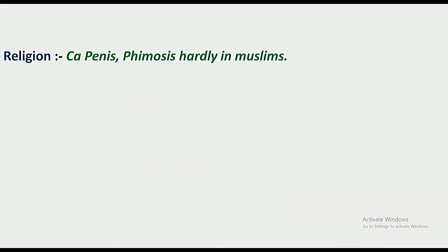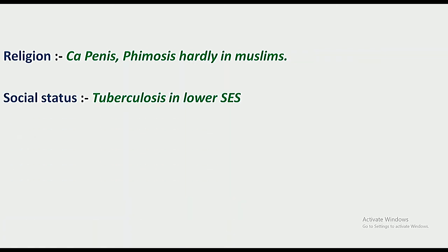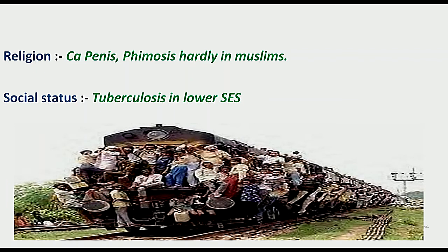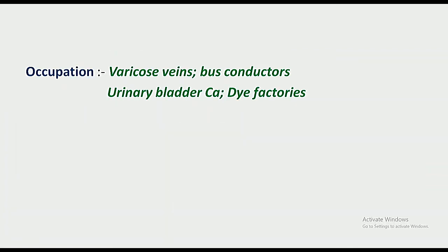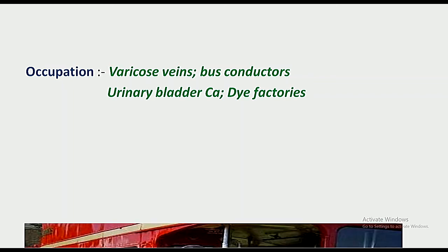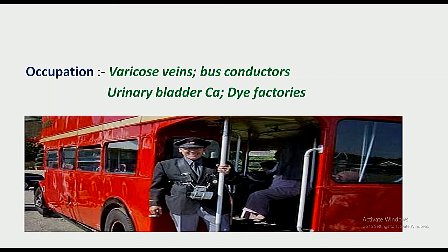Religion plays a role — phimosis and paraphimosis are hardly seen in Muslims because there is a ritual of circumcision at birth. Social status also matters; tuberculosis is common in lower socioeconomic groups due to overcrowding. Occupation also plays an important role — varicose veins are more common in bus conductors, and urinary bladder carcinomas are common in dye factory workers.